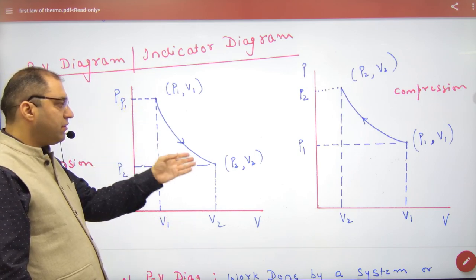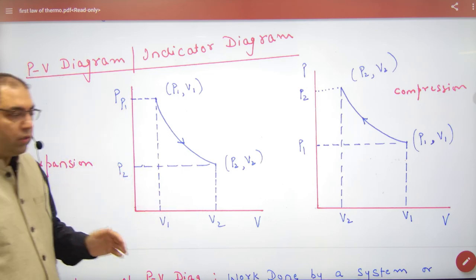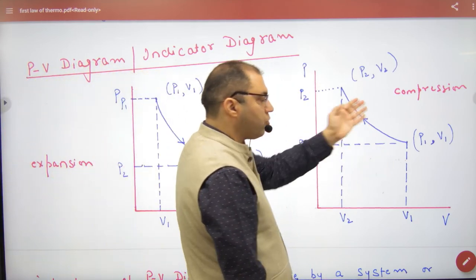P1 V1 to P2 V2. Volume is increasing, which graph is called Expansion. Volume is lower, what is showing? Compression.